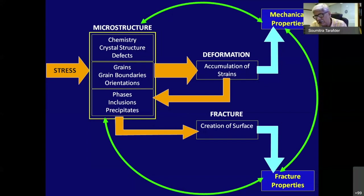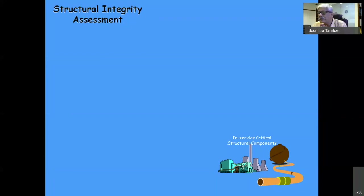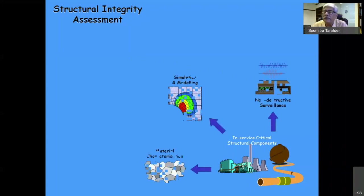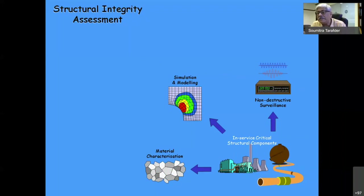One of our main activities at NML is trying to understand this process of damage, and we are also interested in structural integrity assessment. Whenever you have critical structural components, you require three types of information to assess integrity in service: non-destructive surveillance to identify defects generated during service, simulation and modeling to understand the stress situation, and material characterization to understand the state of the material including degradation during service.